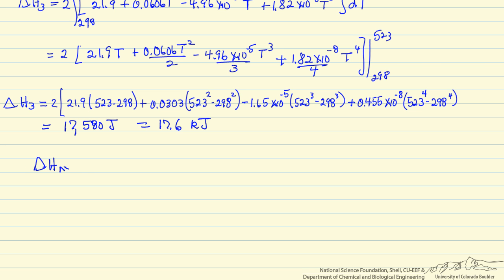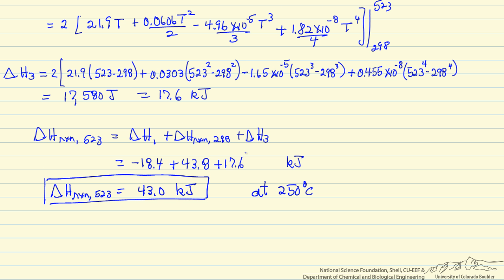So delta H of reaction at 523 kelvin is delta H1 plus delta H of reaction at 298 plus delta H3. So I can substitute these three values in. And so delta H reaction at 523 is 43.0 kilojoules. This is per mole of acetylene reacting.